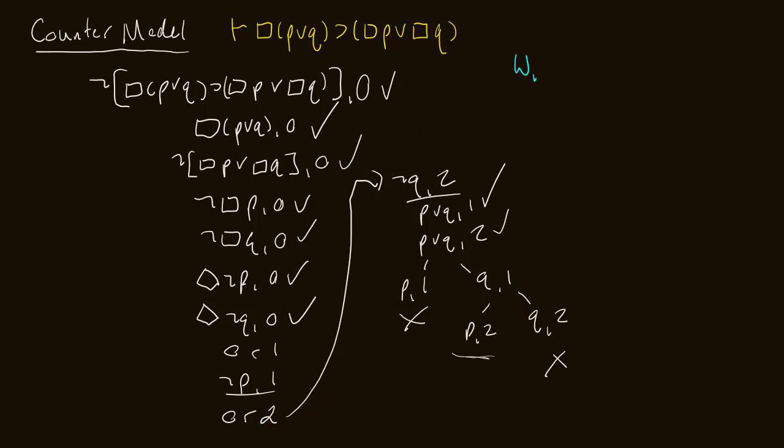So let's write that down. Say we have world zero, we have world one, and we have world two. Now let's write the relations that exist on that branch. So if we look at that branch, we see that zero relates to one and zero relates to two, and those are the only relations we have. So let's draw out those relations.